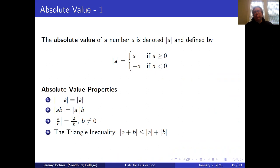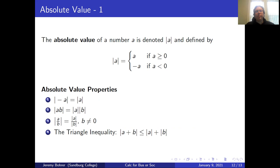The absolute value of a number a, denoted |a|, is defined as: |a| = a if a ≥ 0, and |a| = -a if a < 0. Properties of absolute values: |-a| = |a|; |ab| = |a||b|; |a/b| = |a|/|b| as long as b ≠ 0; and the triangle inequality states that |a + b| ≤ |a| + |b|.